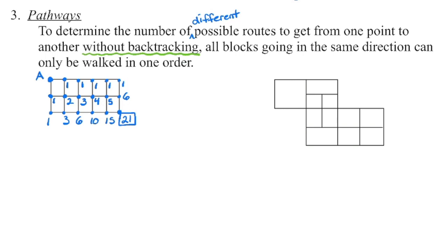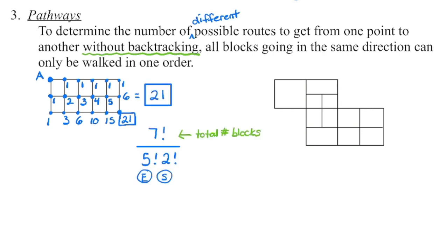Notice that we are either walking east or walking south. In total we walk seven blocks — five east and two south. No matter the route, it's always five east and two south. Since those east blocks all look the same and the south blocks all look the same, we can treat this as a permutation with identical objects: 7 factorial divided by (5! × 2!), remembering to bracket the denominator in your calculator. This gives the total number of different possible routes from point A to point B.